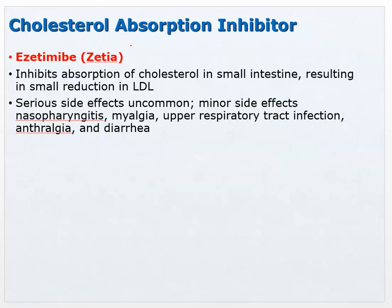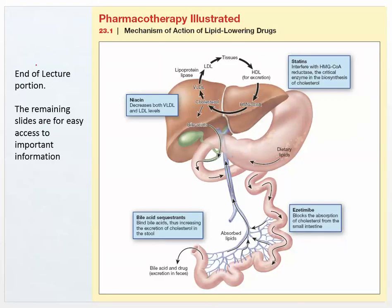Cholesterol absorption inhibitors: ezetimibe (Zetia) works by inhibiting the absorption of cholesterol in the small intestine, resulting in a small reduction of serum LDL. This could be useful for someone who has difficulty reducing dietary cholesterol. Serious side effects are uncommon; minor side effects include nasopharyngitis, myalgia, arthralgia, and diarrhea — likely because more cholesterol remains in the GI tract.